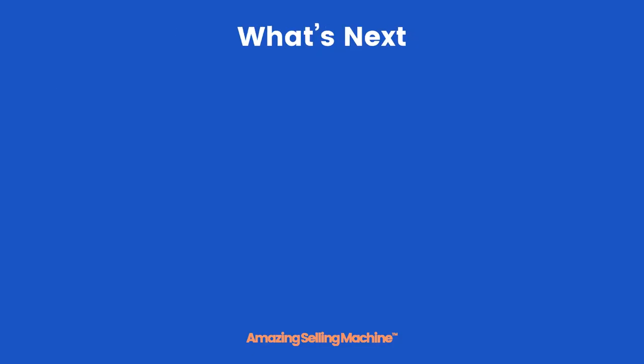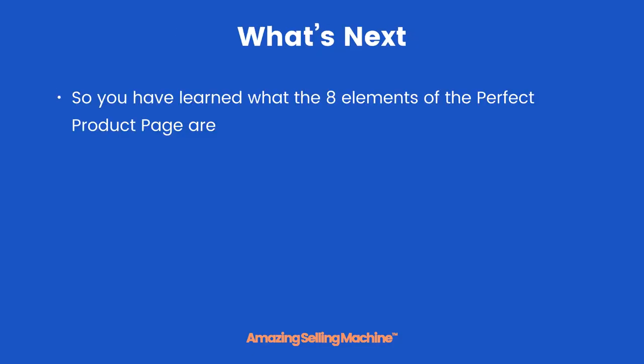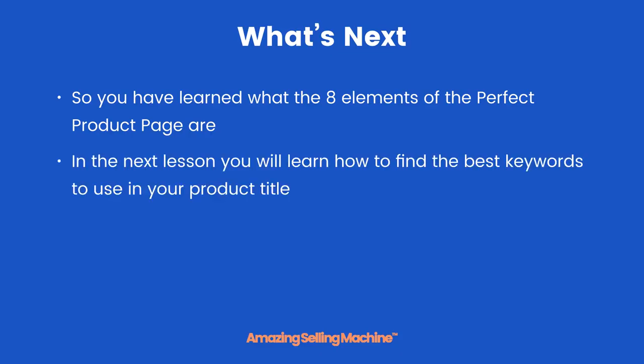So what's next? You've learned what the eight elements of the perfect product page are. In the next lesson you will learn how to find the best keywords to use in your product title. But that's it for this lesson — take care.